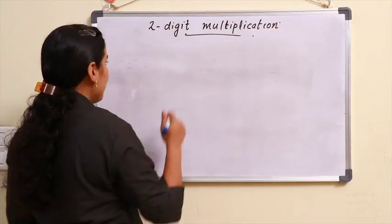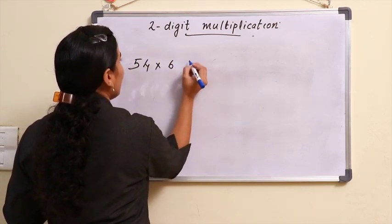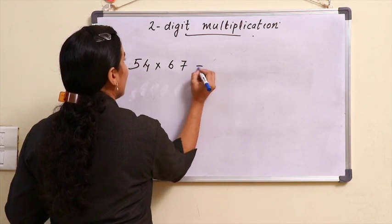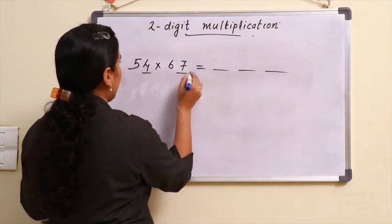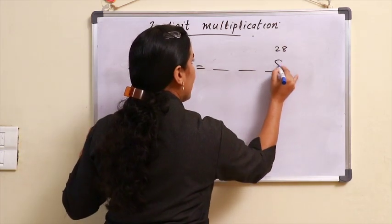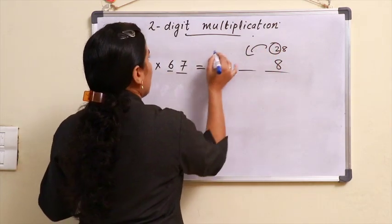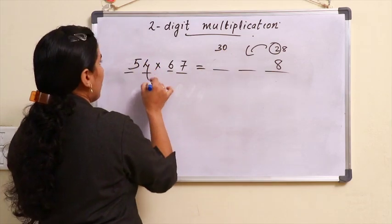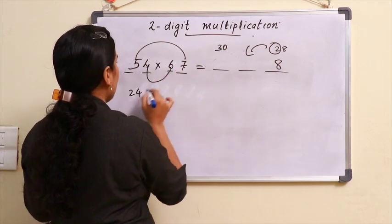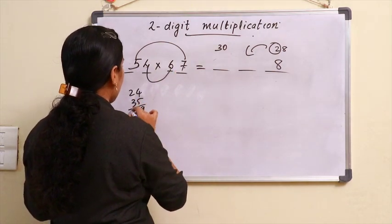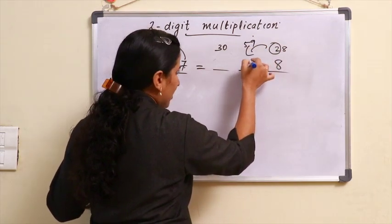Now let's take the next question: 54 × 67. 7 × 4 is 28, so 8 and carry 2. Then 5 × 6 is 30, 4 × 6 is 24, 5 × 7 is 35. 59 plus 2 is 61, so 1 and carry 6.